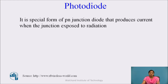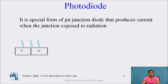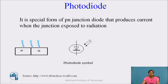The photodiode is a special form of PN junction diode that produces current when the junction is exposed to radiation. This is the symbolic representation of photodiode, where the inverted arrow represents its exposure to light.